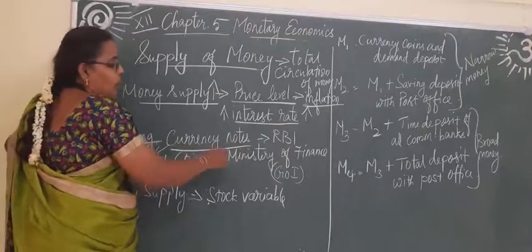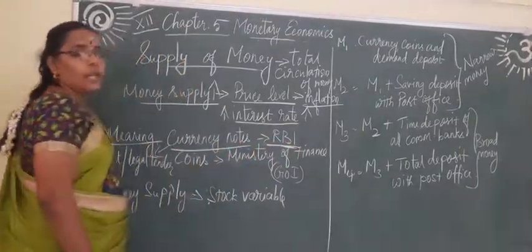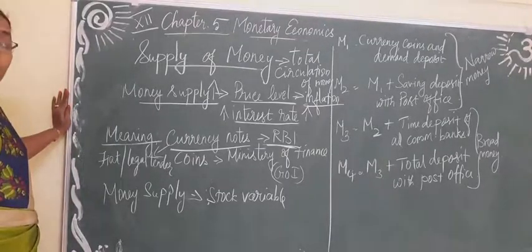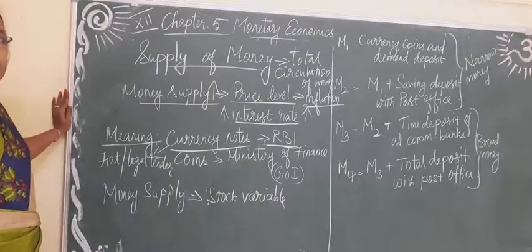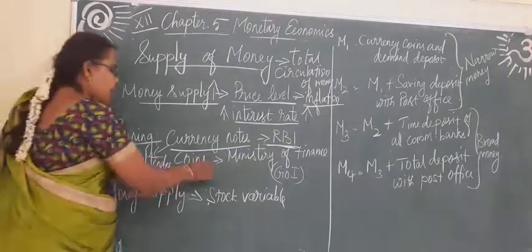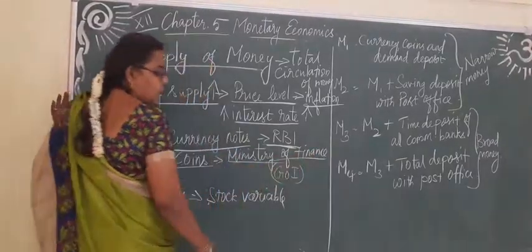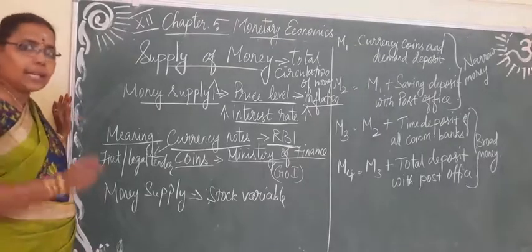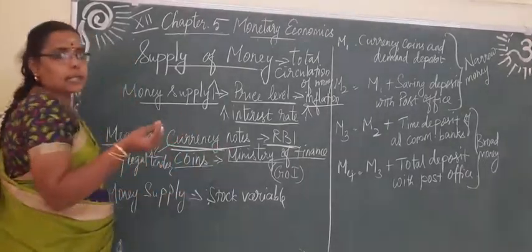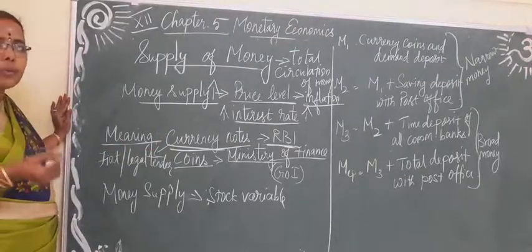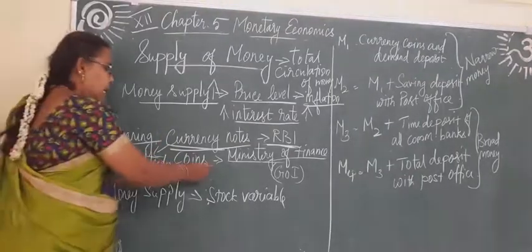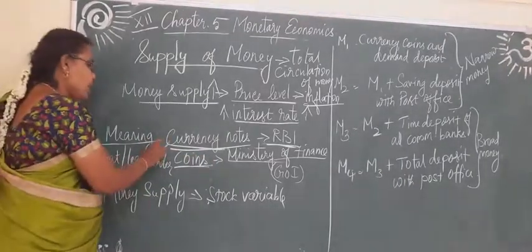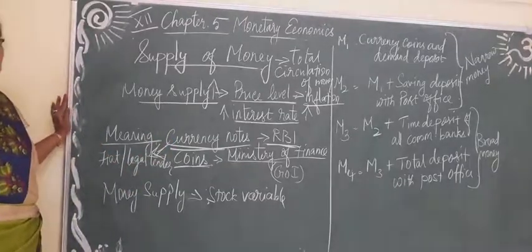RBI is the sole authority to print and issue currency notes in India. The 1 rupee, 2 rupees, 5 rupees, and 10 rupees coins are issued by the Ministry of Finance, i.e., the Government of India. These currency notes are called fiat money or legal tenders.